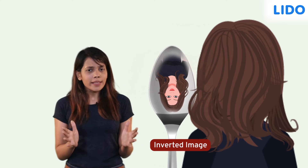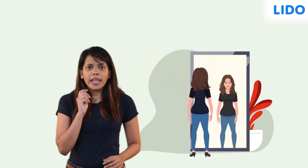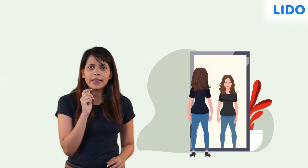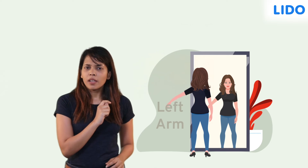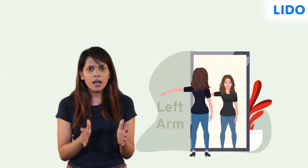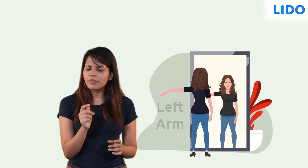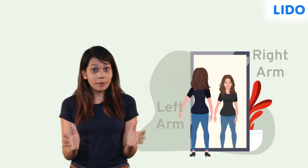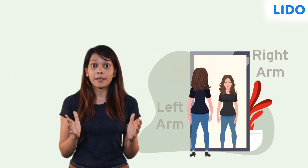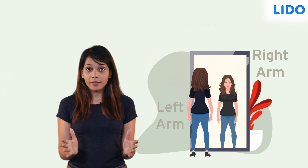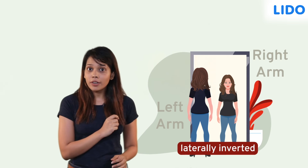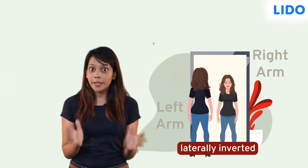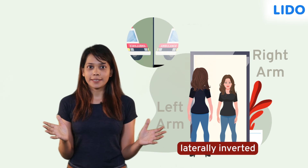But there is one thing about plane mirrors that throws me off a lot. If I lift my left arm, the reflection I see in the mirror appears to be lifting the right arm. This is because images formed by a plane mirror are laterally inverted, so they are flipped sideways.